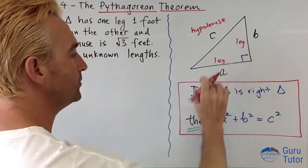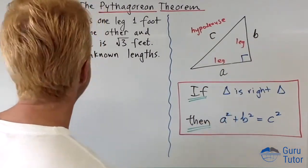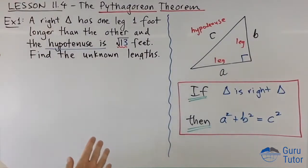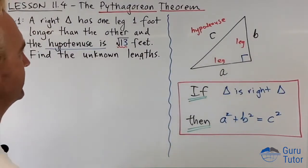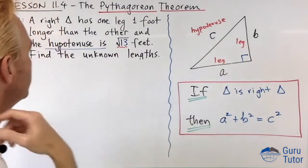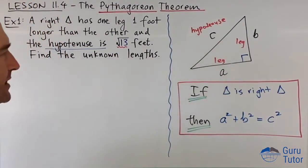If we have a right triangle, then this equation is true. So let's try an example here. Example one: we have a right triangle has one leg one foot longer than the other, and the hypotenuse is root 13 feet. Sorry, I had root 3 there before, just changed it, should be root 13 feet. Find the unknown lengths.